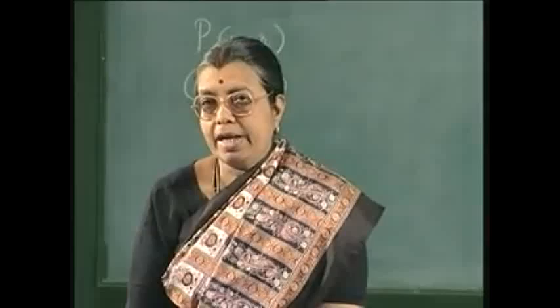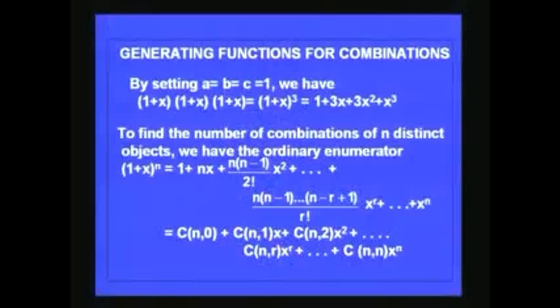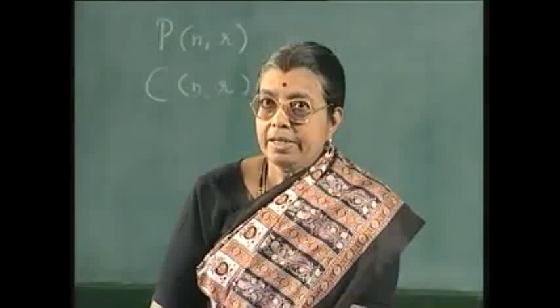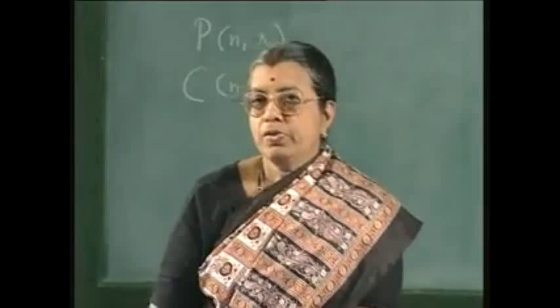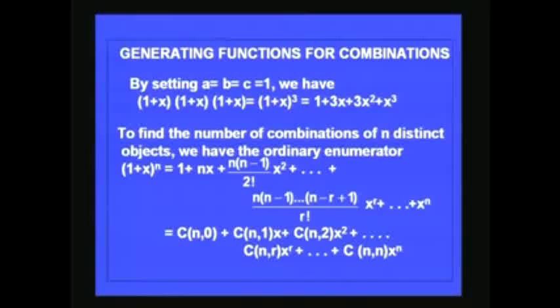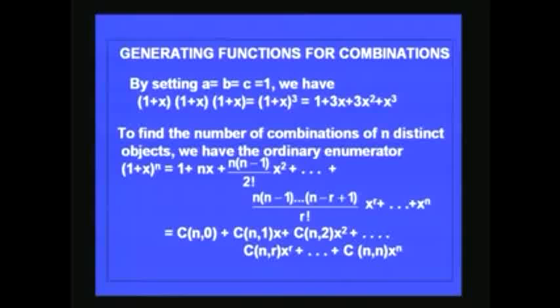Now let us see how the generating function can represent a combination. We have earlier seen how (1 + Ax)(1 + Bx)(1 + Cx) represents the ways of choosing or not choosing A, B, C. Now put a = b = c = 1 in that expression; then you get (1 + x)³ = 1 + 3x + 3x² + x³. What is this coefficient 3? The coefficient represents...